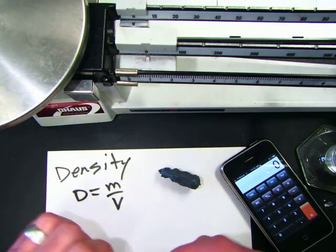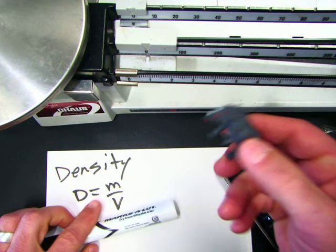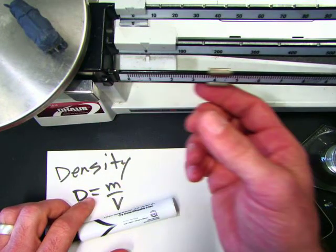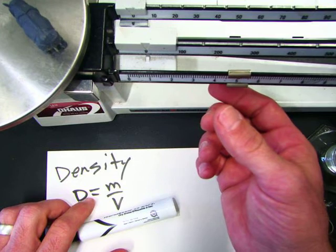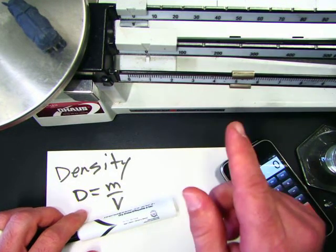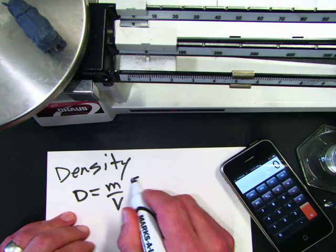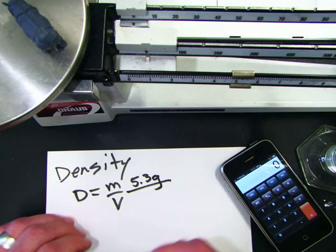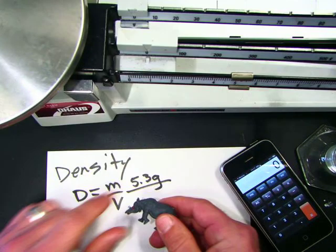So let's go ahead and put our rhino on our triple beam balance and find out the mass of rhino. So we're looking at 5.3 grams, 5.3 grams, but we need to know the volume.